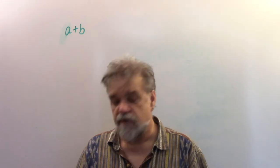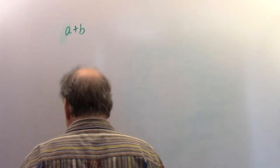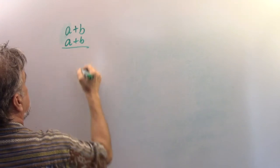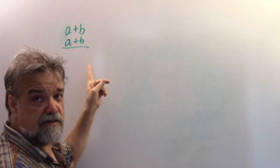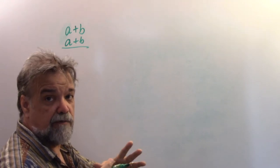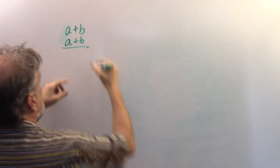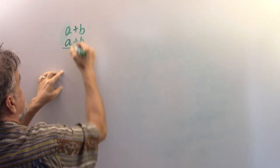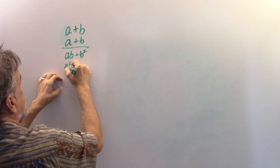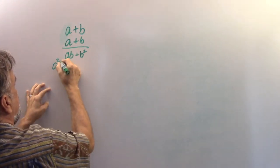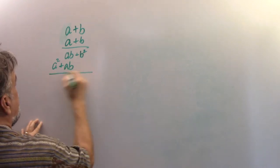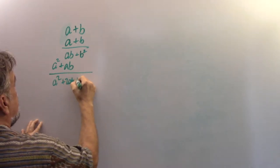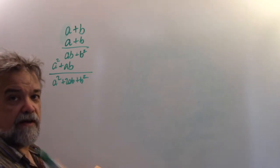I want to look at powers of a binomial. Let's say we have the binomial a plus b. What is (a + b) squared? I'll take (a + b) and multiply it times (a + b). I like to put them vertically like numbers: b times b is b-squared, b times a is ab, a times b is ab, and a times a is a-squared. That gives us a-squared plus 2ab plus b-squared.